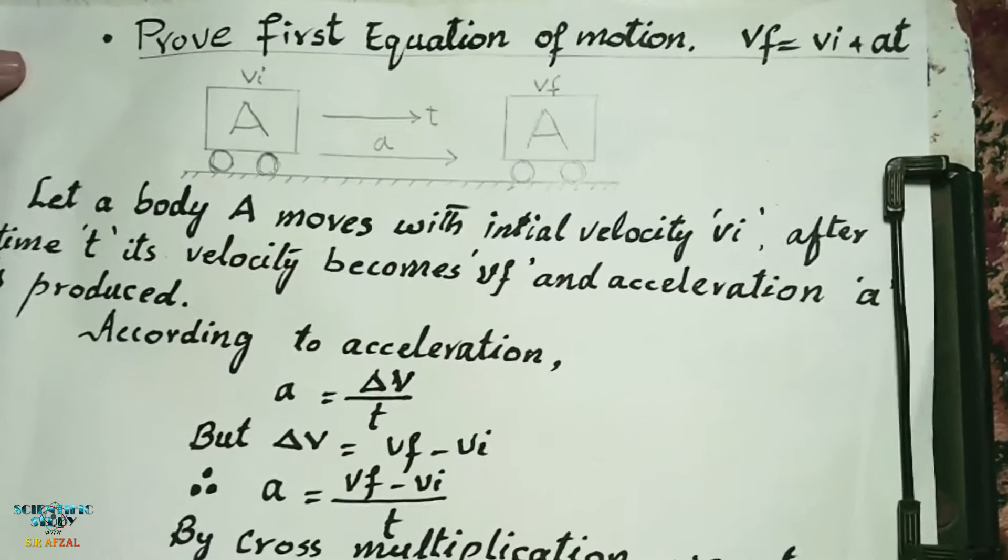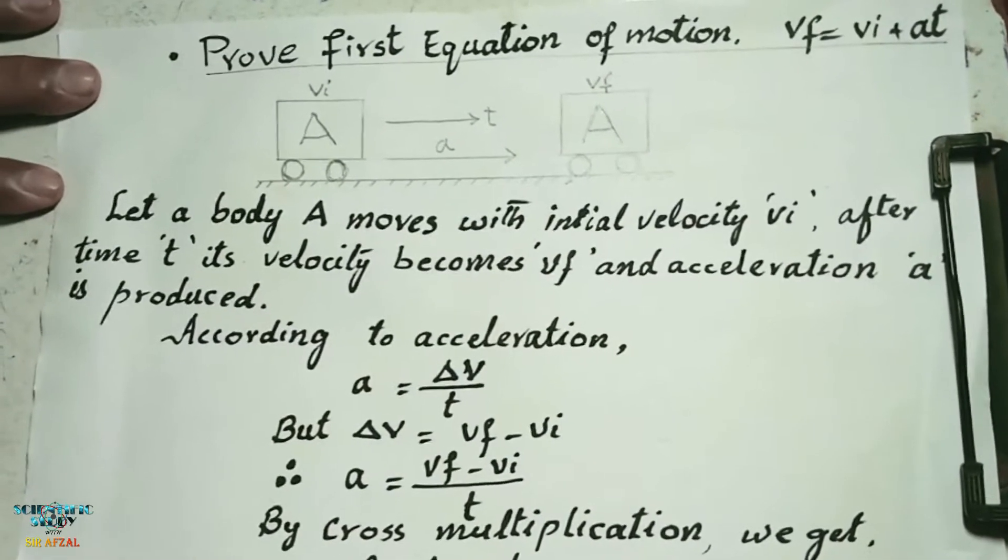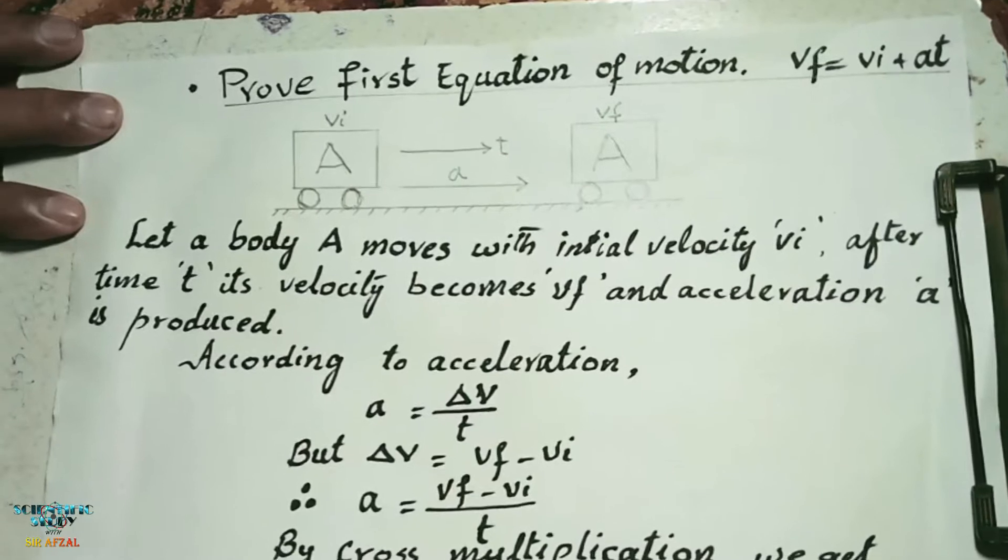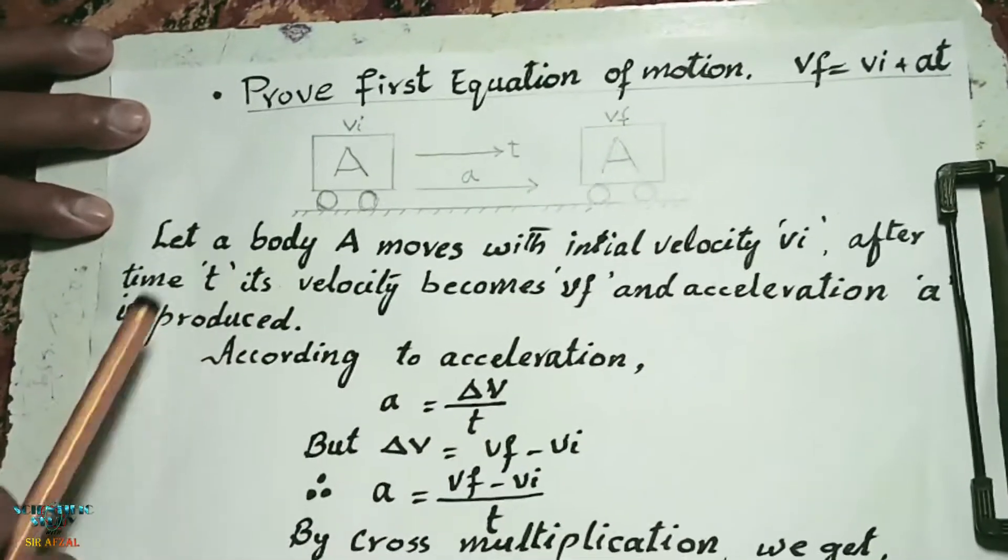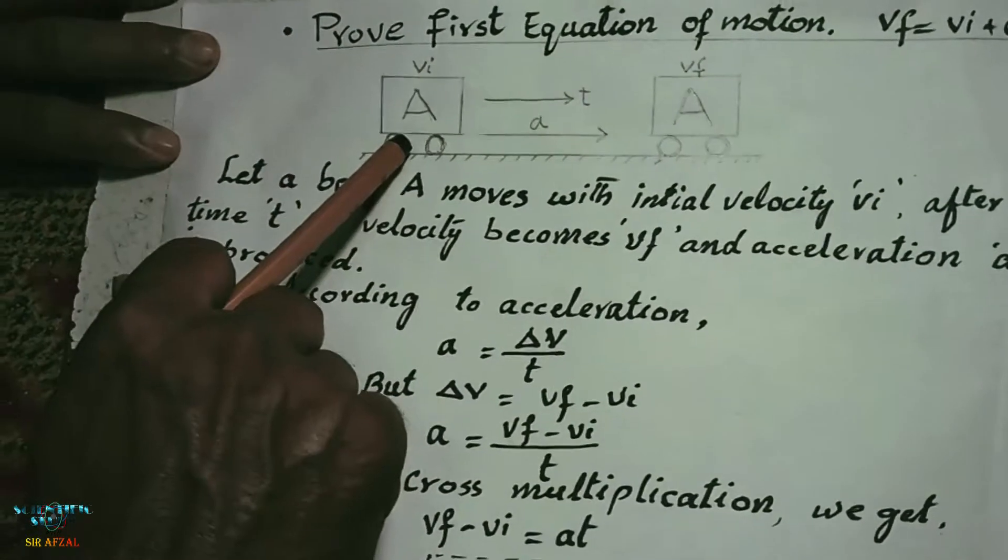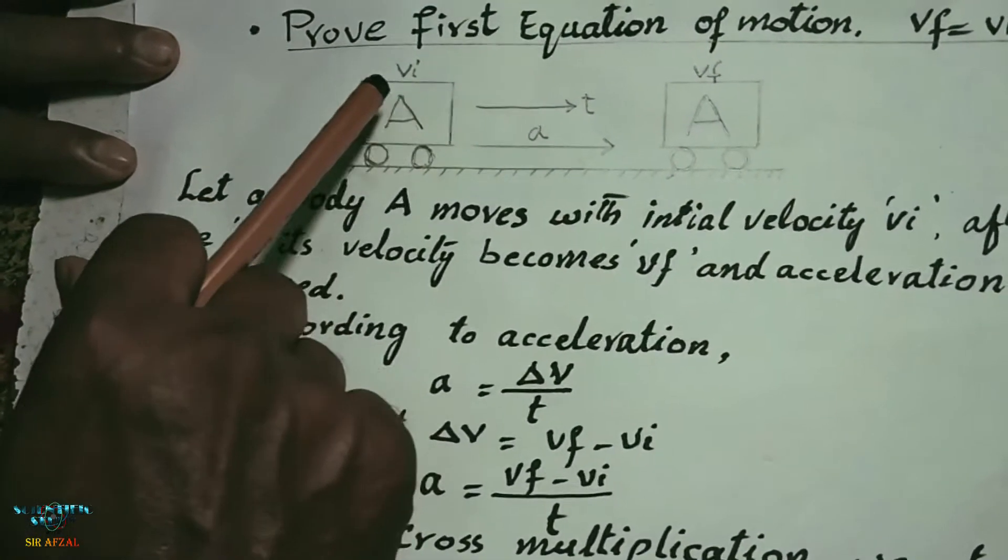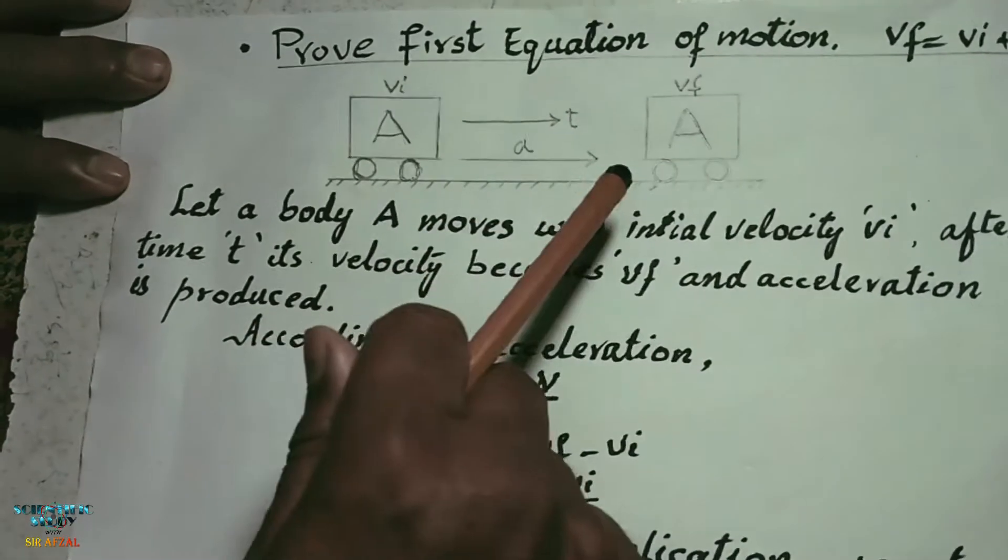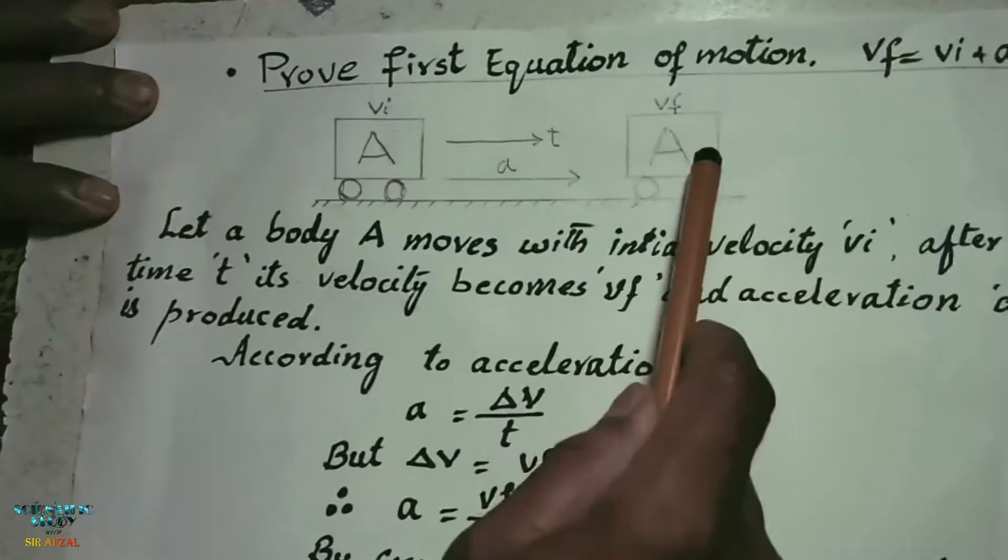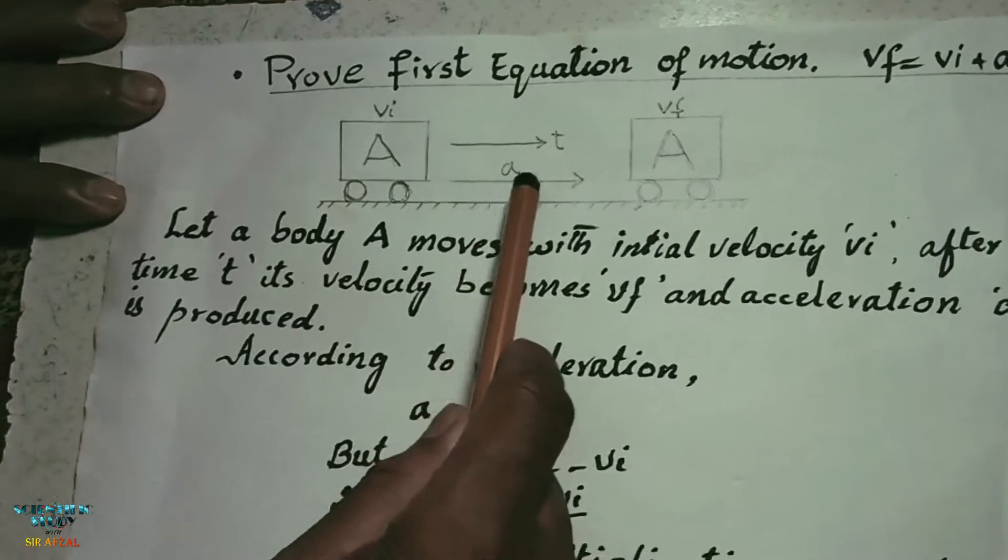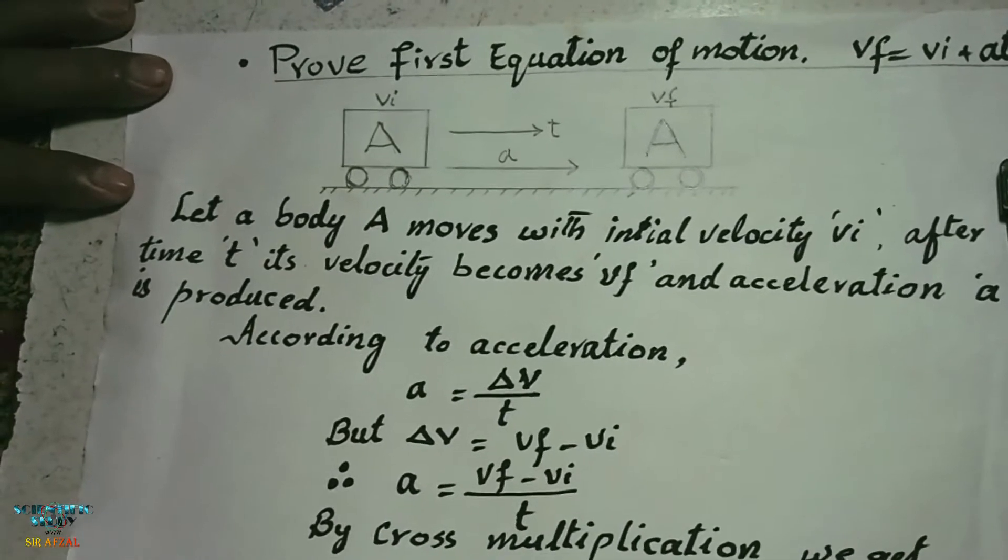Okay dear students, now there are three derivations in this chapter and for the derivation a diagram is necessary. The diagram is simple. A is an object which is moving with initial velocity vi, and after time t its velocity becomes vf and acceleration a is produced, because you know that rate of change of velocity is called acceleration.